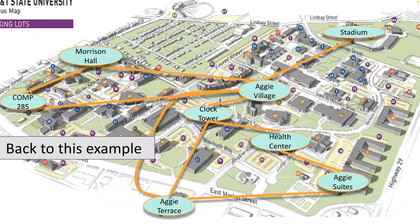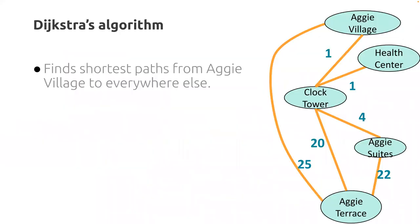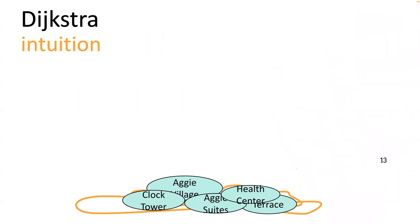Back to our simple examples. We covered this before spring break — this is a map of NCAT. Our goal is to find the shortest path from Aggie Village to all the other nodes. This is a simplified example; I removed some of the nodes and added edge weights. We said it takes one minute to walk between these different places. Walking directly from Aggie Village to Aggie Terrace takes 25 minutes. The algorithm that solves this is called Dijkstra's algorithm — named after the guy who discovered it. If you ever discover a cool algorithm, you might get it named after yourself.